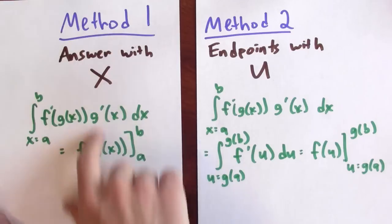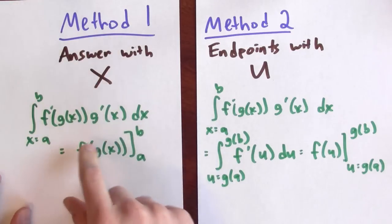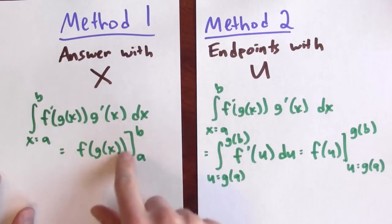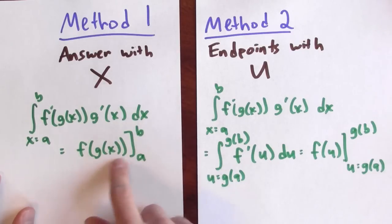Let's summarize these two different approaches. The first time I went through this problem, I found the antiderivative in terms of x. I wanted to integrate this, and I found an antiderivative, and then I just evaluated it at b and a and took the difference.